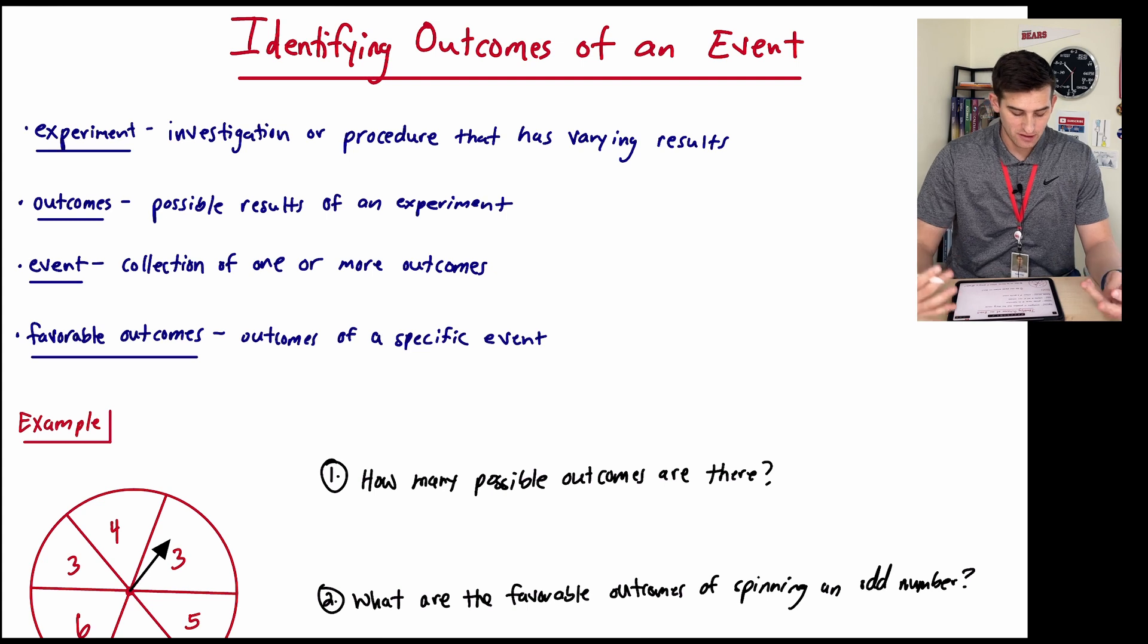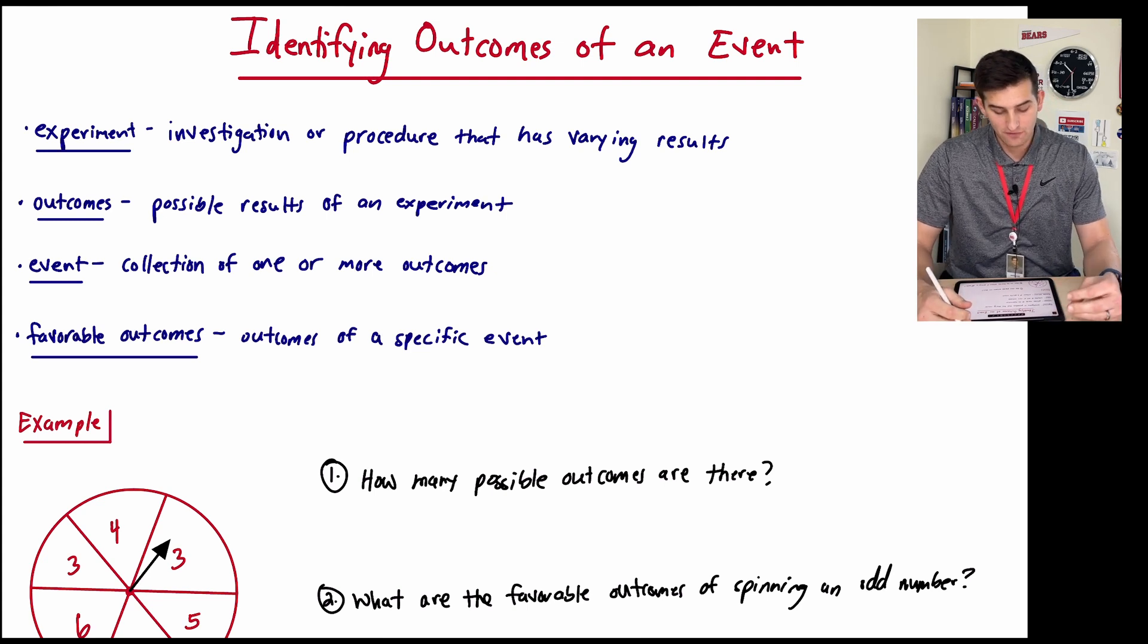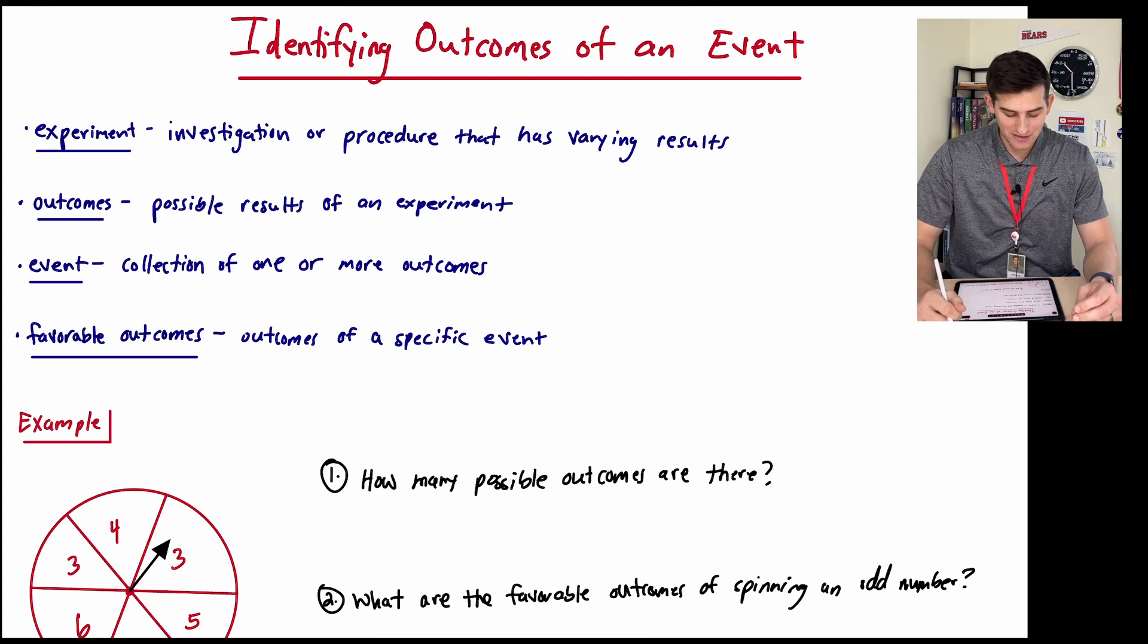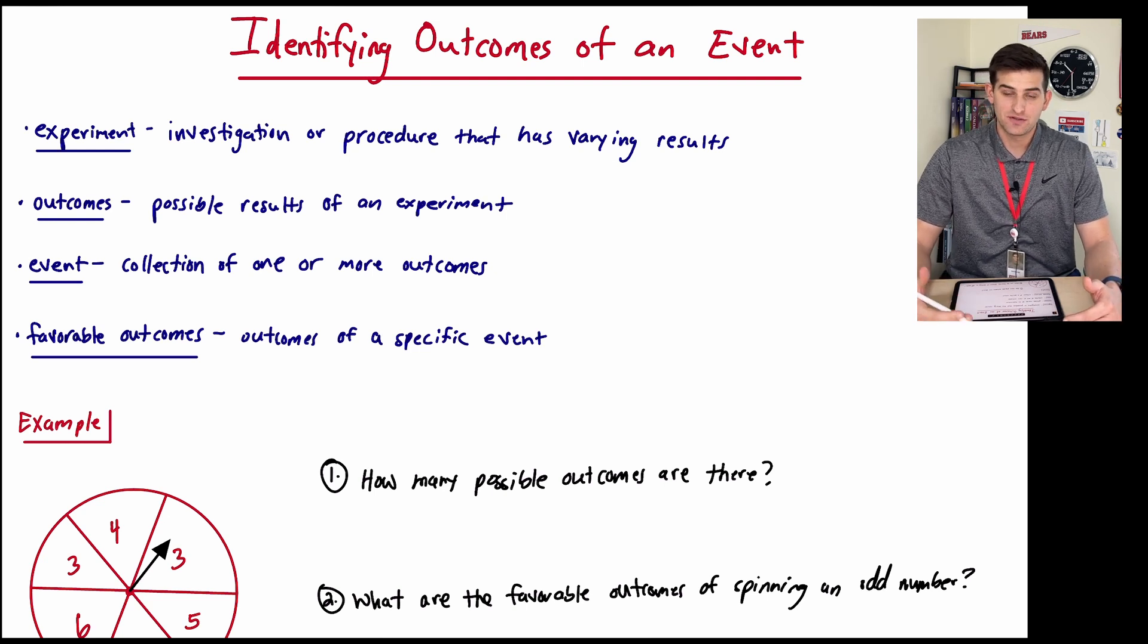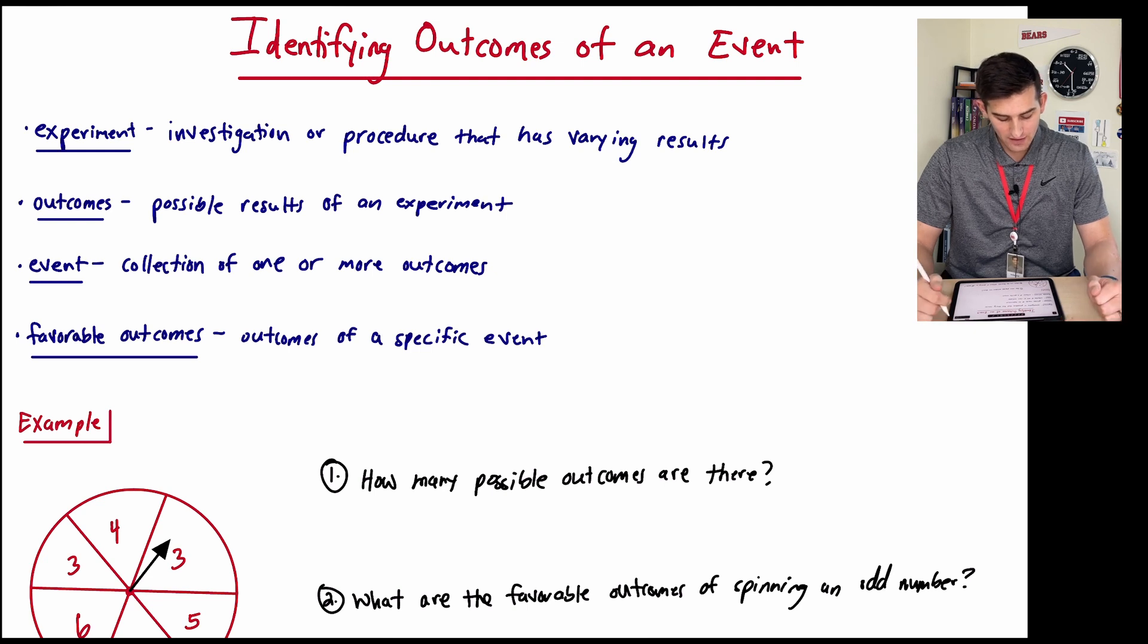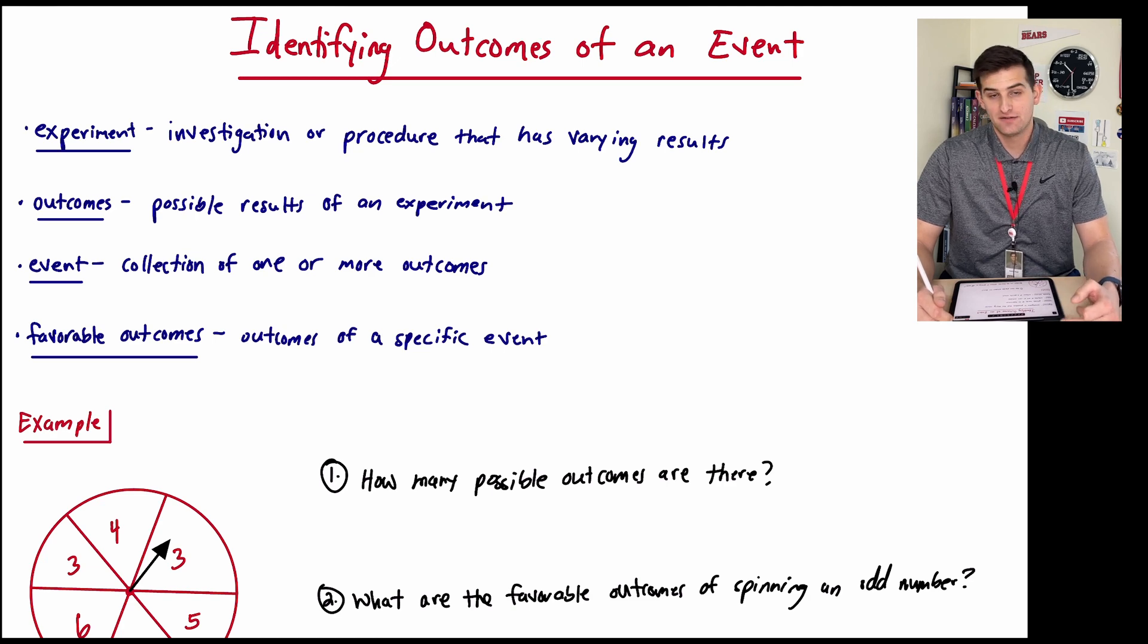So first of all, we have some kind of experiment. The definition here for probability purposes is going to be an investigation or procedure that has varying results. Now we go a step further, we find the outcomes of the experiment. So these are the possible results from this experiment. The event now is a collection of one or more outcomes, and then a favorable outcome is an outcome of a specific event.